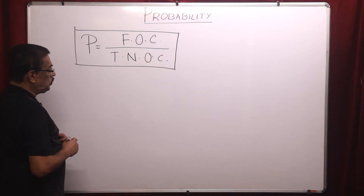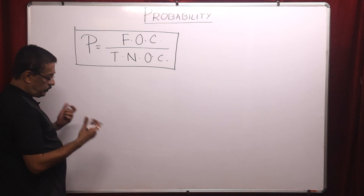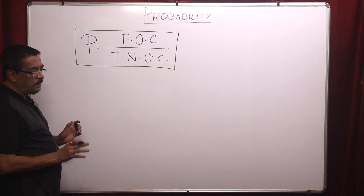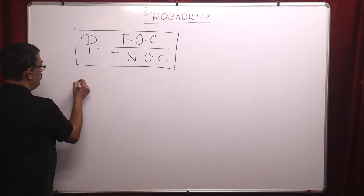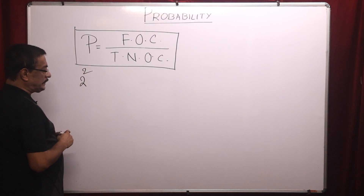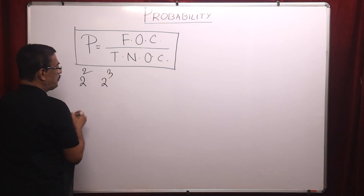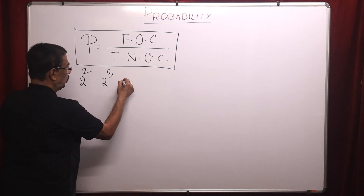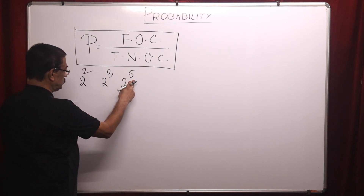Let us consider two coins are tossed. The total number of outcomes is two to the power two, because for one coin the result has two possibilities, so it's two to the power the number of coins tossed. When three coins are tossed: two to the power three. Five coins are tossed: two to the power five.